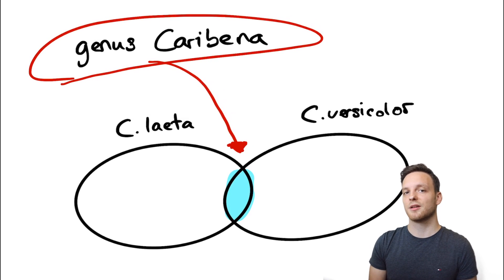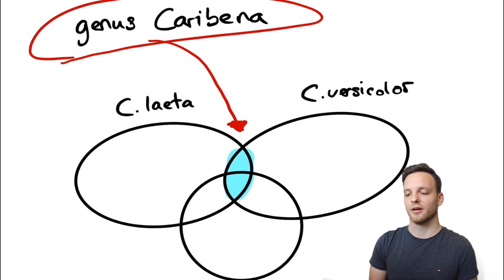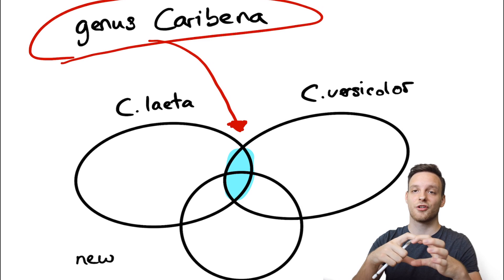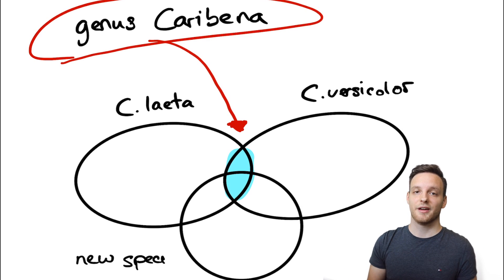If there is now a new species described within this genus, at the moment there is none but think about it there is a third species coming to this genus Caribena. Then there is a third circle and in the middle part where all these circles match there is still the genus definition.